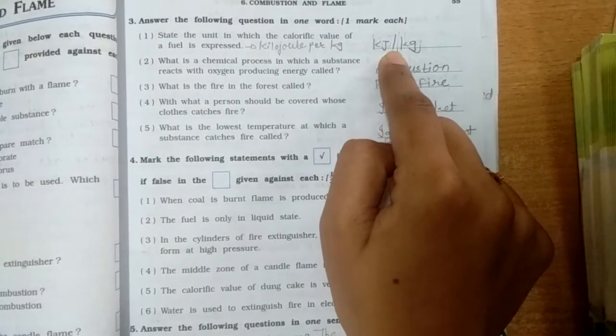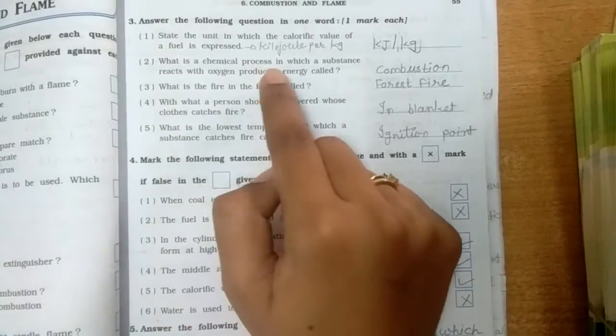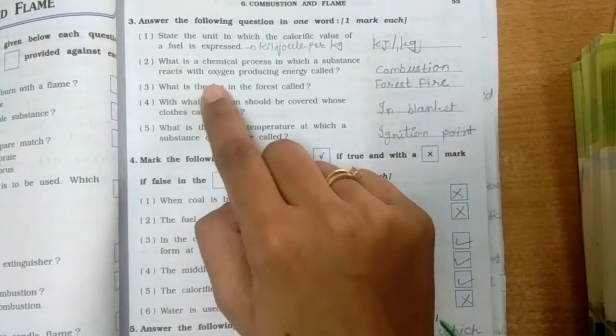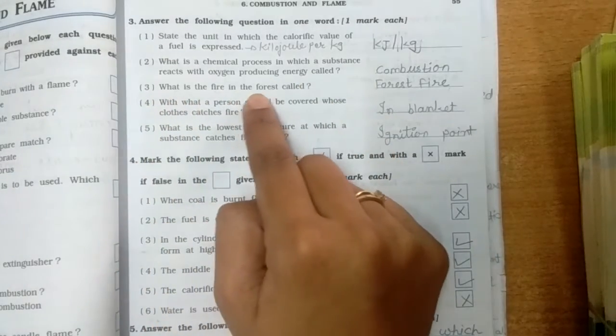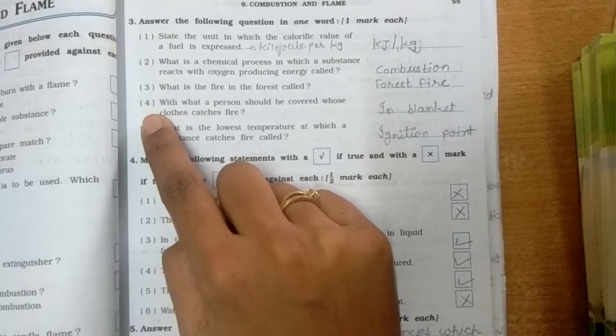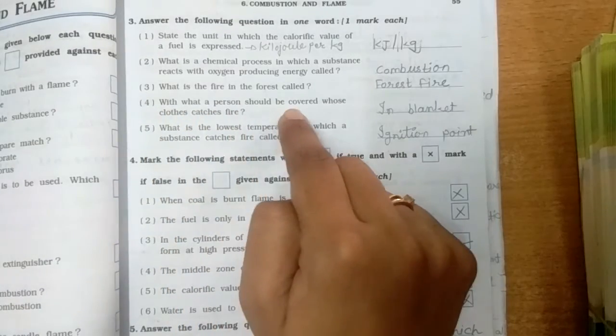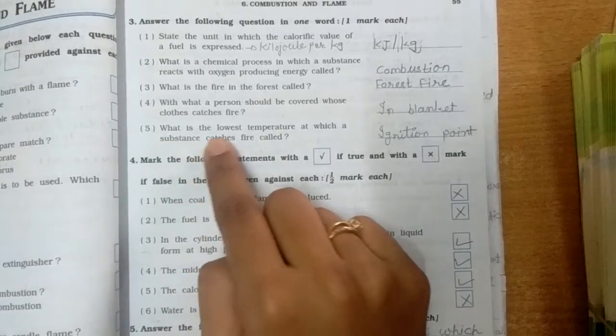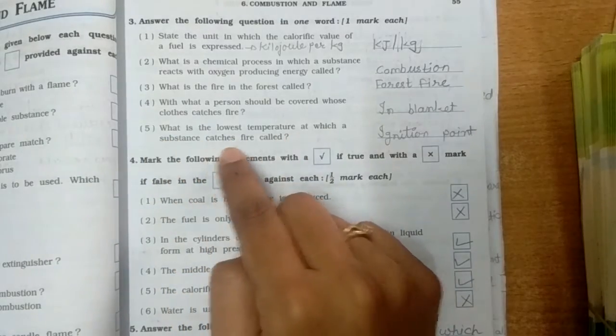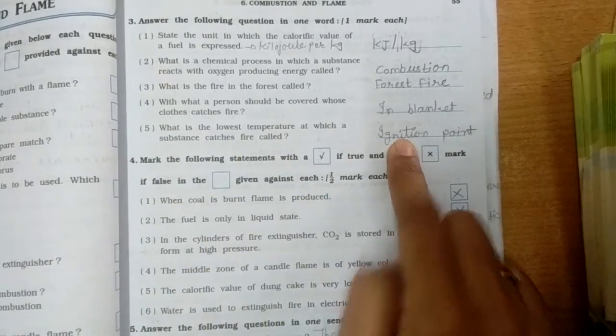Second, what is the chemical process in which a substance reacts with oxygen producing energy called? Combustion. Third, what is the fire in the forest called? Forest fire. Fourth, which water person should be covered whose clothes catch fire? In a blanket.